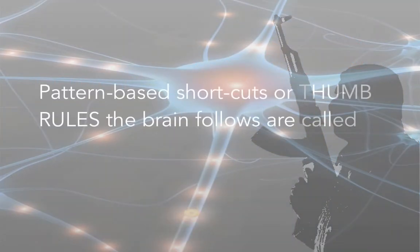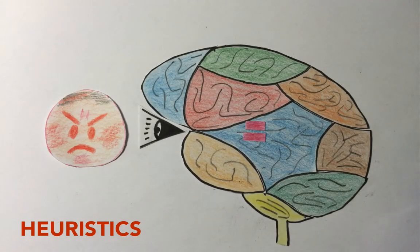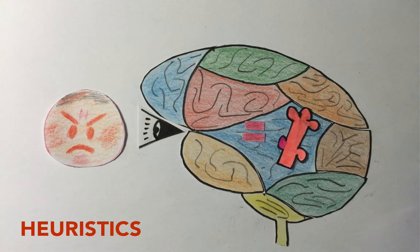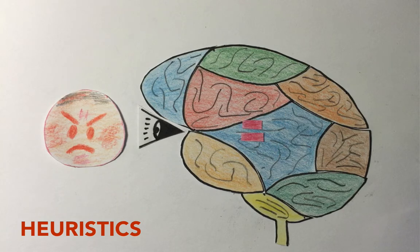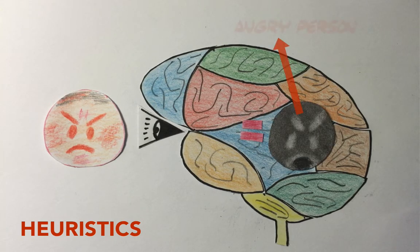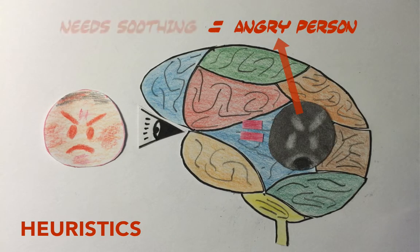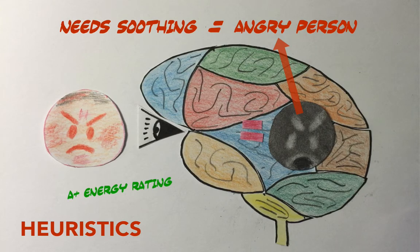Such pattern-based mental shortcuts or thumb rules your brain follows are called heuristics. Most of the heuristics are great for us humans as they make our brains super efficient in processing everyday information and arriving at a decision or action quickly using least amount of brain power.